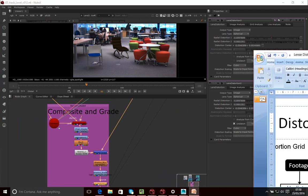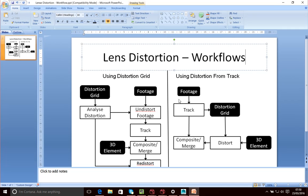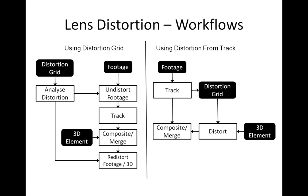Just to give you an idea of what that workflow looks like — I've put together a little slide here. What we're doing is: taking the distortion grid, analyzing the distortion, using that to undistort the footage at the beginning. We track, we merge with our 3D element, and then we redistort the footage. The reason for doing that is to make it look a bit more natural.